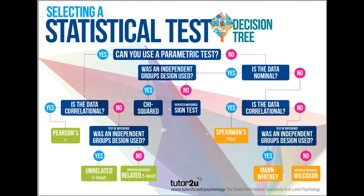Statistical tests and when to use them. To determine which statistical test you need to use, you must first figure out what type of data you've gathered. There are three types you need to know about: ordinal, nominal, and interval or parametric.